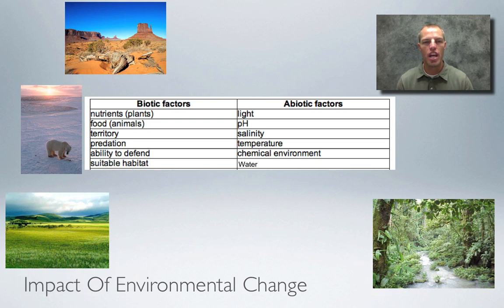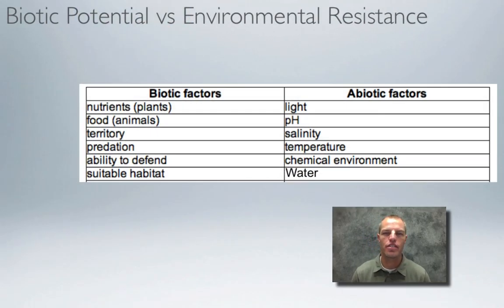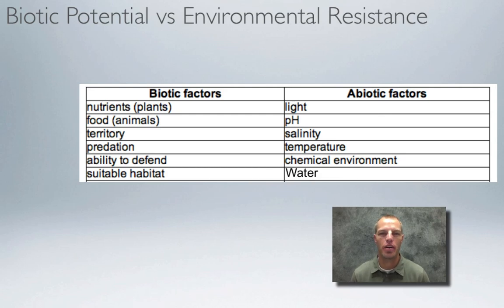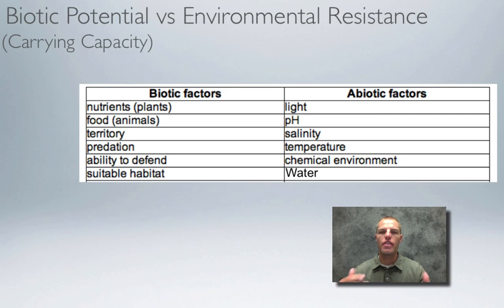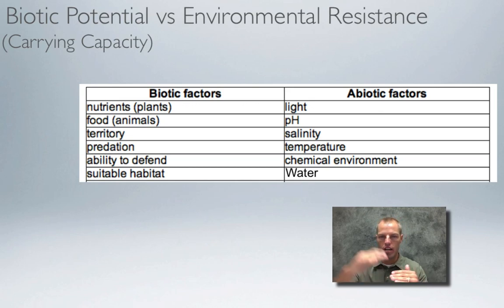Each biome is unique, with living and non-living factors making up that environment. When change happens to those factors, organisms can be affected. This brings us to biotic potential versus environmental resistance. Biotic potential means reaching maximum life ability — related to carrying capacity. If biotic and abiotic factors work in an organism's favor, it can grow and reproduce exponentially with no illness and plenty of food and light.